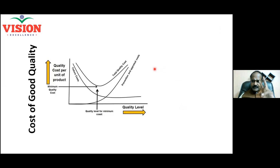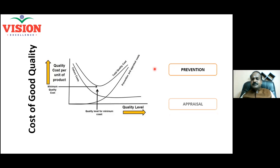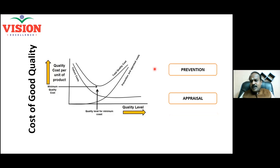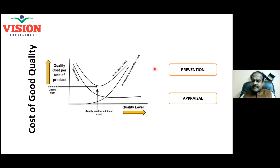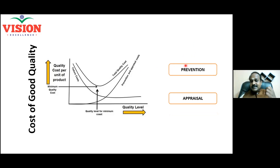What is cost of good quality? It has two components. One is prevention, and another one is appraisal. What is prevention? All your preparation, all your proactive activities to prevent a failure. Anything you do to prevent a failure is called prevention. For example, all of you are undergoing this training program — that is a prevention activity. The cost associated with it is the cost of prevention, which is a component of cost of good quality.